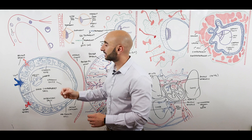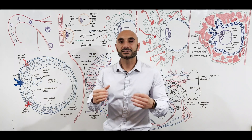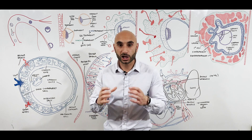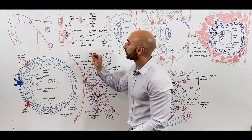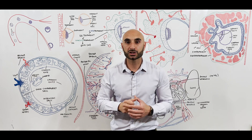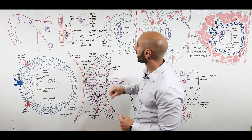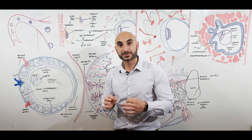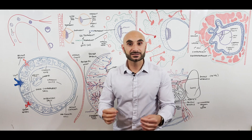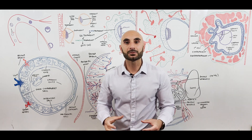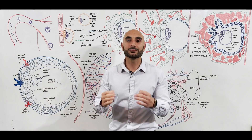The trophoblast is responsible for invading the uterine epithelium, and it's the trophoblast that helps make the placenta. By day eight, it differentiates into two structures: the syncytiotrophoblast and the cytotrophoblast. The syncytiotrophoblast is responsible for secreting human chorionic gonadotropin (HCG), which is picked up in bedside pregnancy tests as well as serum pregnancy tests — it's a test of beta-HCG.